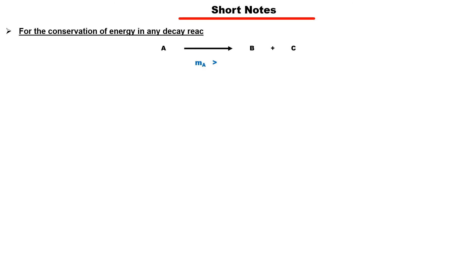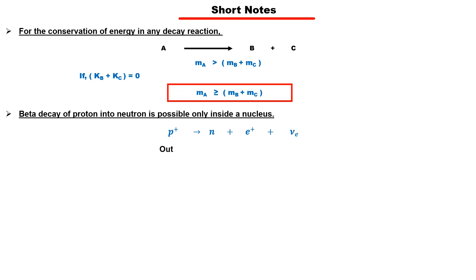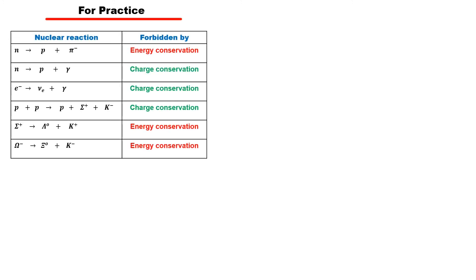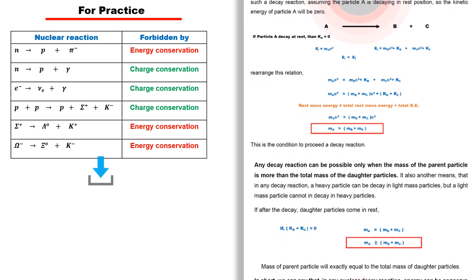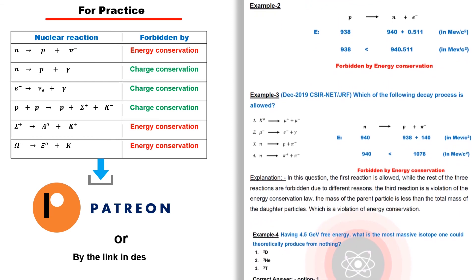In summary: in any decay reaction, for energy conservation, the mass of the parent particle must be greater than or equal to the total mass of the daughter particles. If daughter particles come to rest after decay, the masses are exactly equal. Beta decay of a proton into a neutron can only occur inside a nucleus — outside, it violates energy conservation. For charge conservation, total charge must remain conserved. Practice reactions are provided to verify which are forbidden by energy conservation and which by charge conservation. Detailed PDF notes of this lecture are available via the Patreon page or the link in the description.